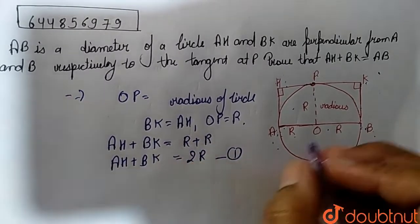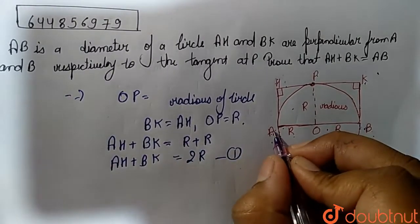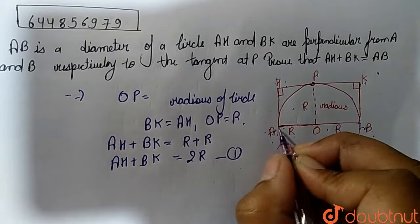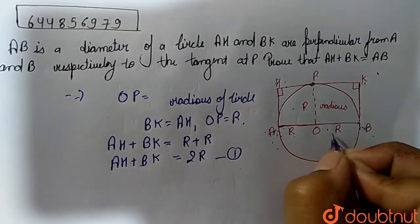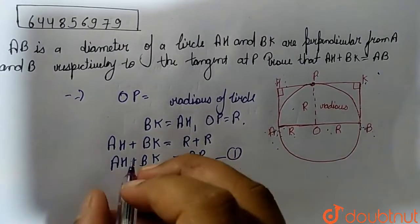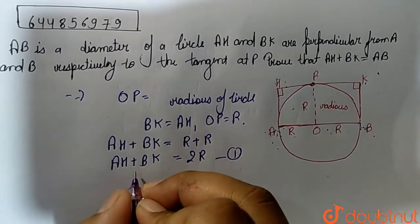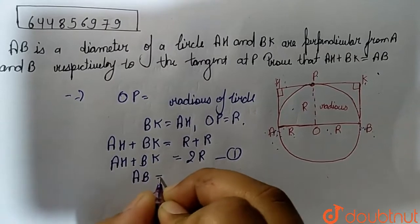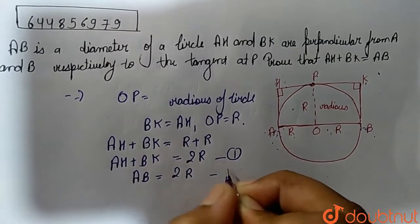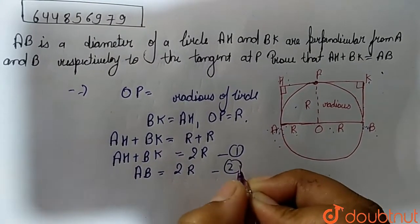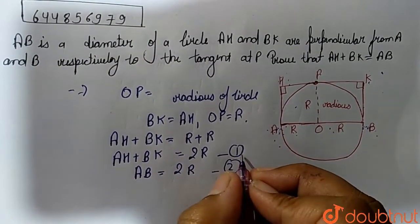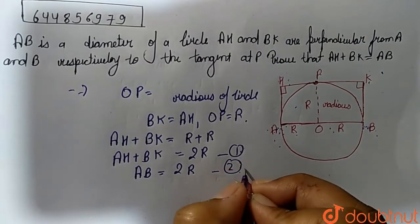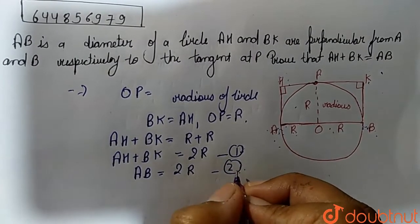Similarly, the value of AB will be equal to r + r = 2r. So equation number 2 is: AB = 2r.